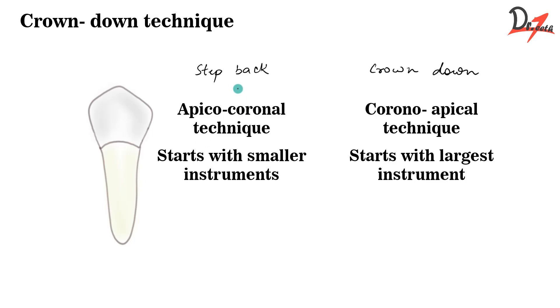In the step back technique, we shape the apical third initially, as I already told you, and in the crown down technique, we shape the coronal one-third initially. In the step back technique, we commonly use the hand file, but in the crown down technique, we commonly use the rotary file. So these were some of the differences between the step back technique and the crown down technique.